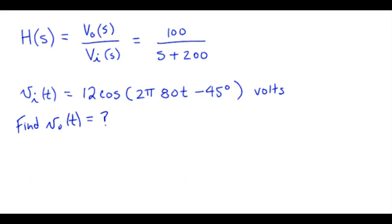So we need to evaluate H of S at S is j omega, so we have 100 over j omega plus 200.